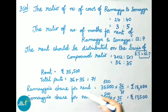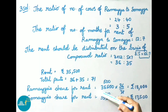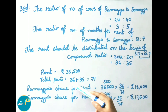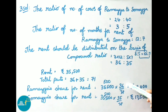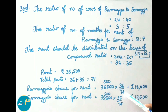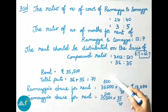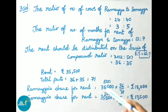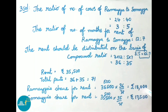Ramaya's share for rent equals total rent 35,500 into 36 out of 71. Since 71 times 500 is 35,500, multiply 500 into 36, that is 18,000 rupees.